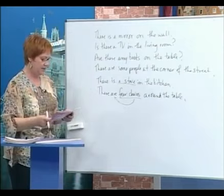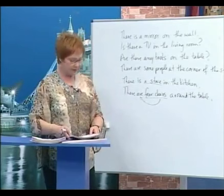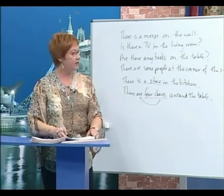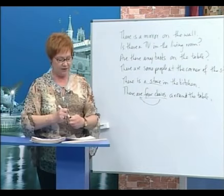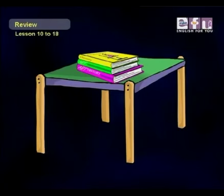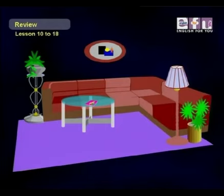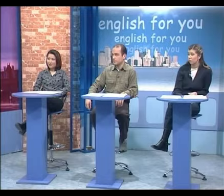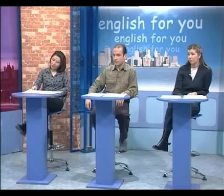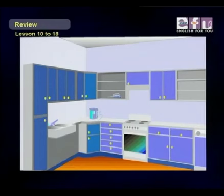Now let's practice by asking some questions. Remember 'any' and 'some.' Let's look at my picture and answer questions about it. Ali: Are there any books on the table? Yes, there are three books on the table. Susan: Is there a sofa in the living room? Yes, there is a sofa in the living room. Isabel: Is there any furniture in the garden? No, there isn't any furniture in the garden. Ali: Are there any people in the kitchen? No, there aren't any people in the kitchen. Great.